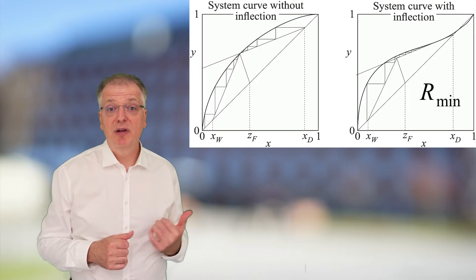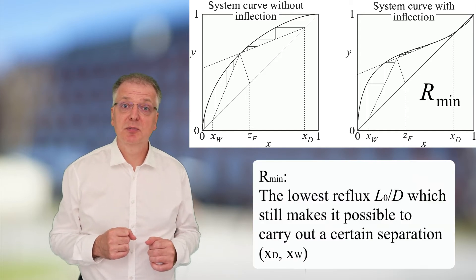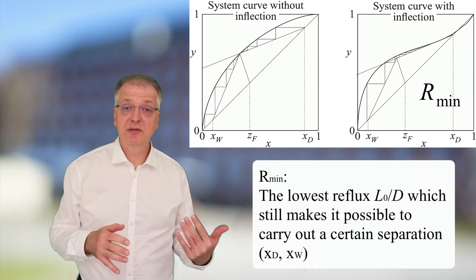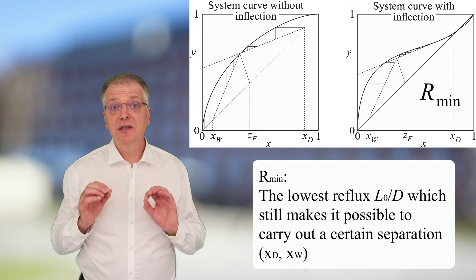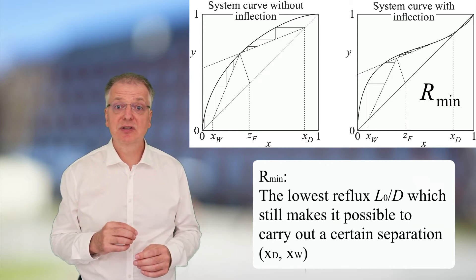The minimum reflux ratio R-min is the lowest possible reflux ratio R equals L0 divided by D for which it is theoretically possible to achieve a certain separation.